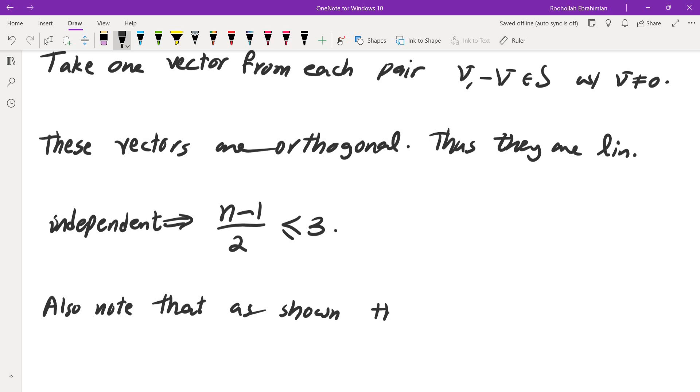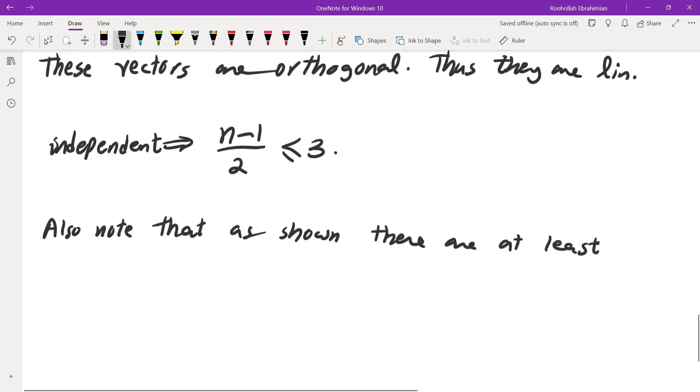Also, note that as shown, there are at least seven vectors in S. So the vectors would be plus minus V, plus minus W, plus minus V cross W, and zero. Thus, N must be seven.